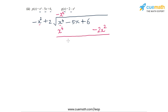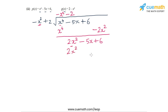We write +2x², then bring down -5x + 6. The second multiplier must turn -x² into 2x², so it is -2. This generates the terms 2x² - 4. Subtracting again we are left with -5x + 10.